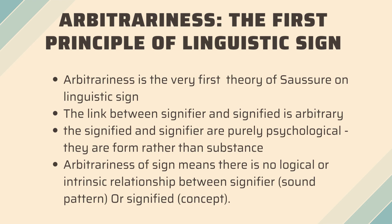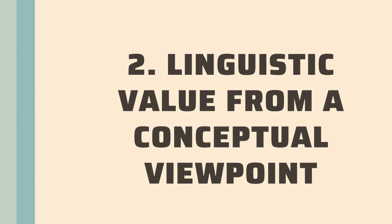Arbitrariness is the very first theory of Saussure on linguistic sign. The link between signifier and signified is arbitrary, says Saussure. The signified and signifier are purely psychological, and they are forms rather than substance. Arbitrariness of sign means there is no logical or intrinsic relationship between the signifier — the sound pattern — and the signified — the concept.